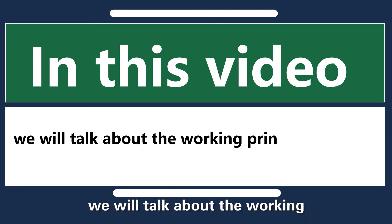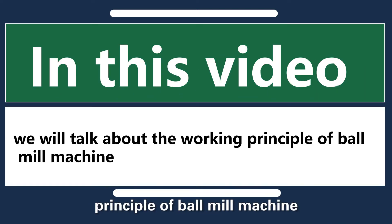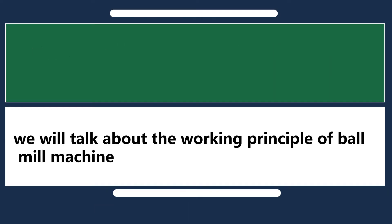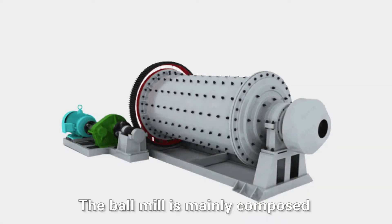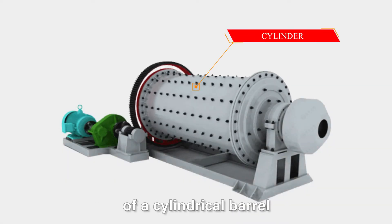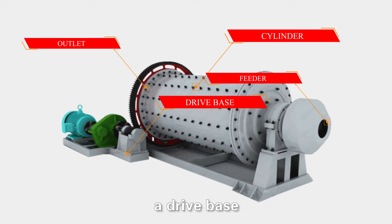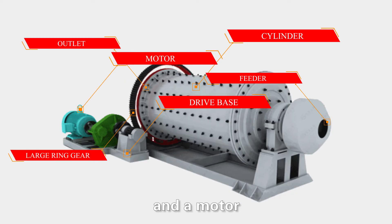In this video, we will talk about the working principle of a ball mill machine. The ball mill is mainly composed of a cylindrical barrel, a feeder, a drive bus, a large ring gear, and a motor.